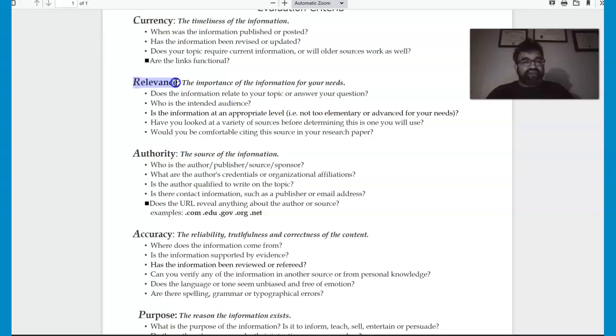So the next acronym is relevance, the importance of the information that you need and for your needs. So does the information relate to your topic or answer your question? Who's the intended audience? Is the information at an appropriate level? Is it too juvenile? Is it too elementary? Or is it too advanced for your needs? Have you looked at the variety of sources before determining this is the one you will use? And would you be comfortable citing the source in your research approach? So this is the second acronym that is really important.